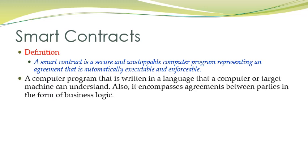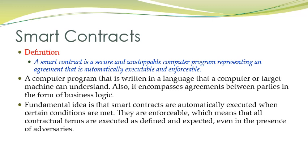A smart contract is a computer program written in a language that a computer or target machine can understand. It encompasses the agreements between parties in the form of business logic. This program verifies the agreement conditions, and if those conditions are met, it allows the transaction. The fundamental idea is that the program executes automatically when certain conditions are met, and it is enforceable, meaning all contractual terms are executed as defined.